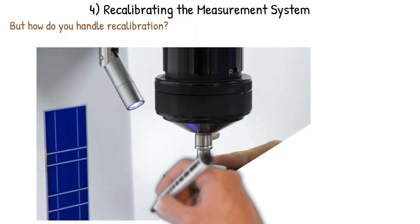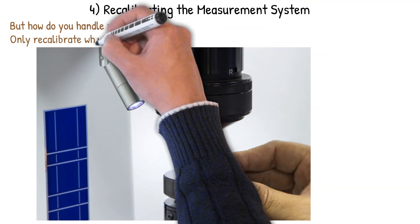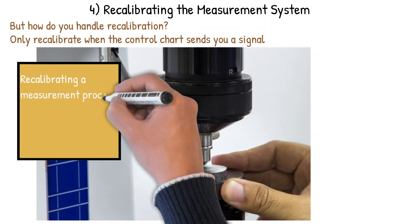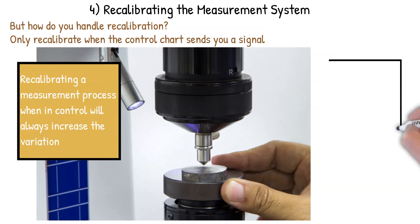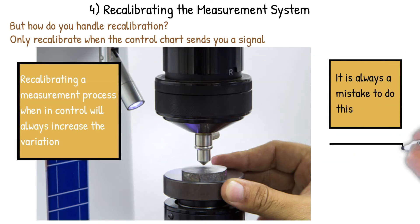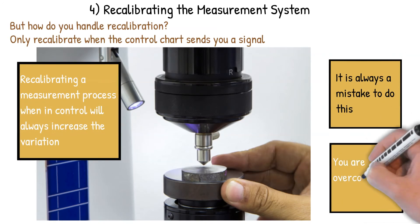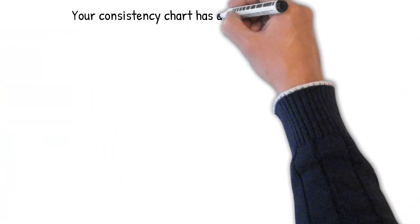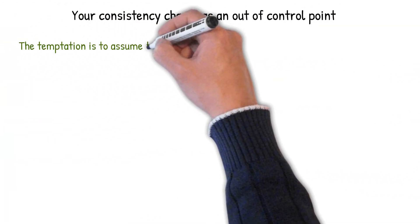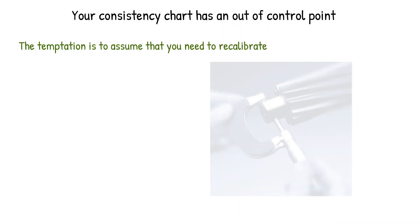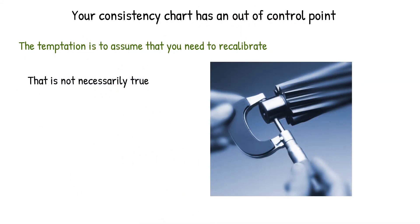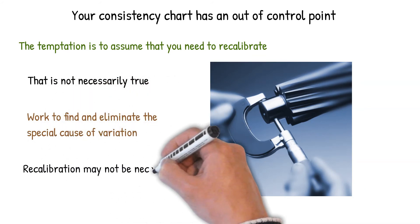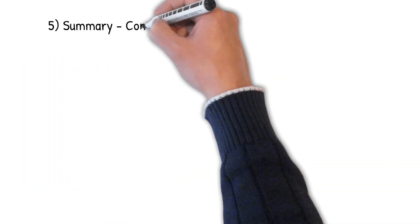Let's get into recalibrating the measurement system. You only recalibrate when the control chart sends you a signal. Recalibrating a measurement process that's in control will always increase variation in the process — it's always a mistake and amounts to over-controlling the process. If your consistency chart has an out-of-control point, the temptation is to assume you need to recalibrate, but that's not necessarily true. You should work to find and eliminate the special causes of variation — recalibration may not be necessary.